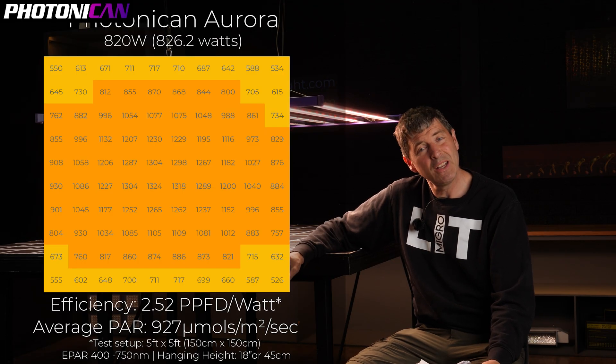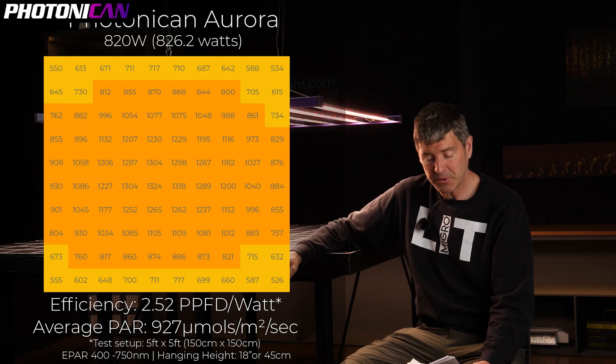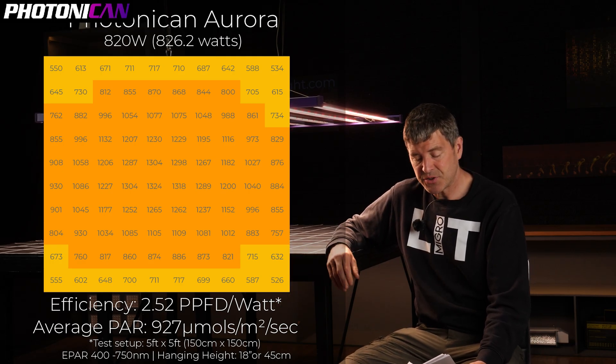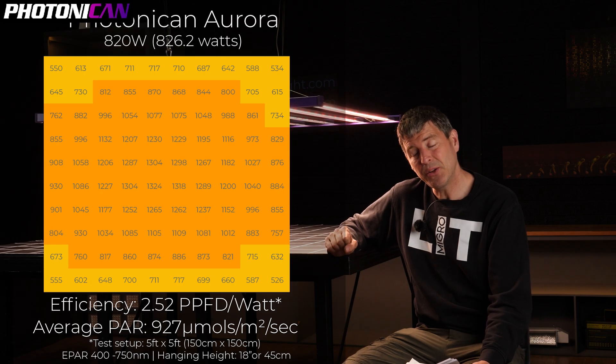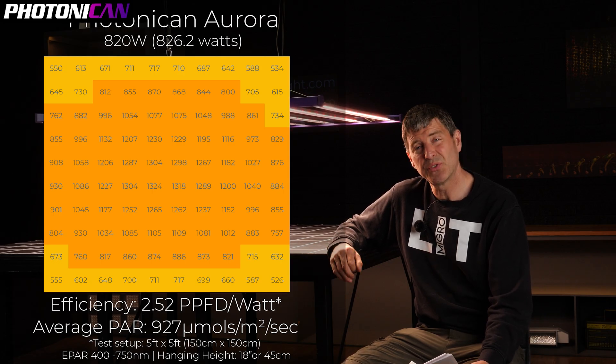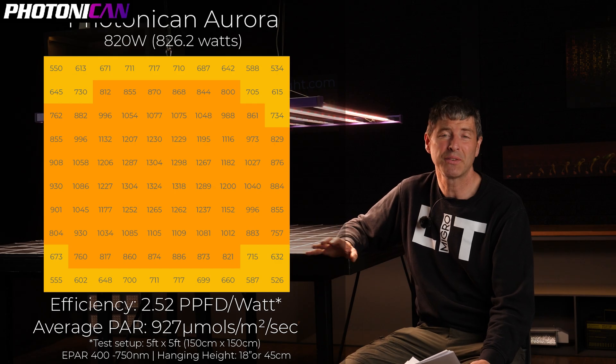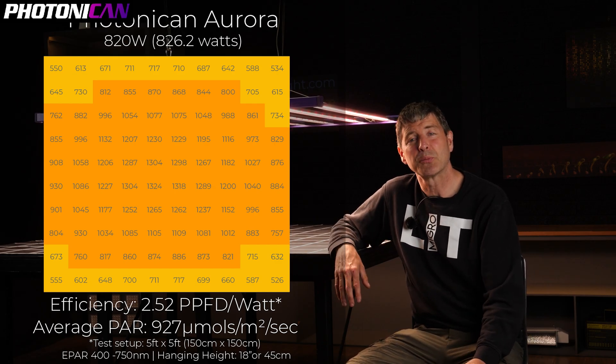If you want a little bit more even spread, hang at 18 inches or 45 centimeters and you get an average of 927 micromoles or 2.52 system efficiency. That's only down 4%, but as you can see, there's a much more uniform spread.